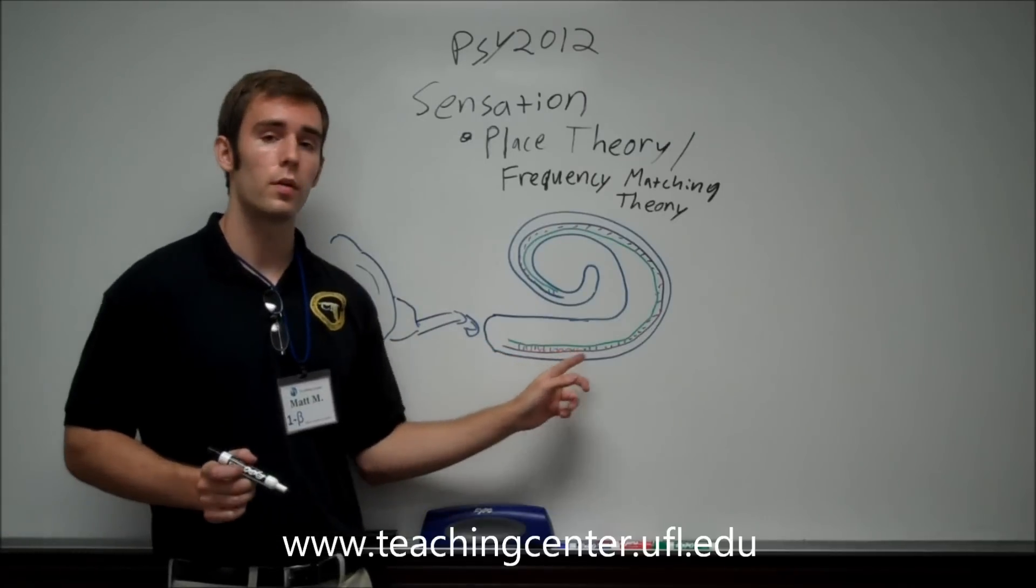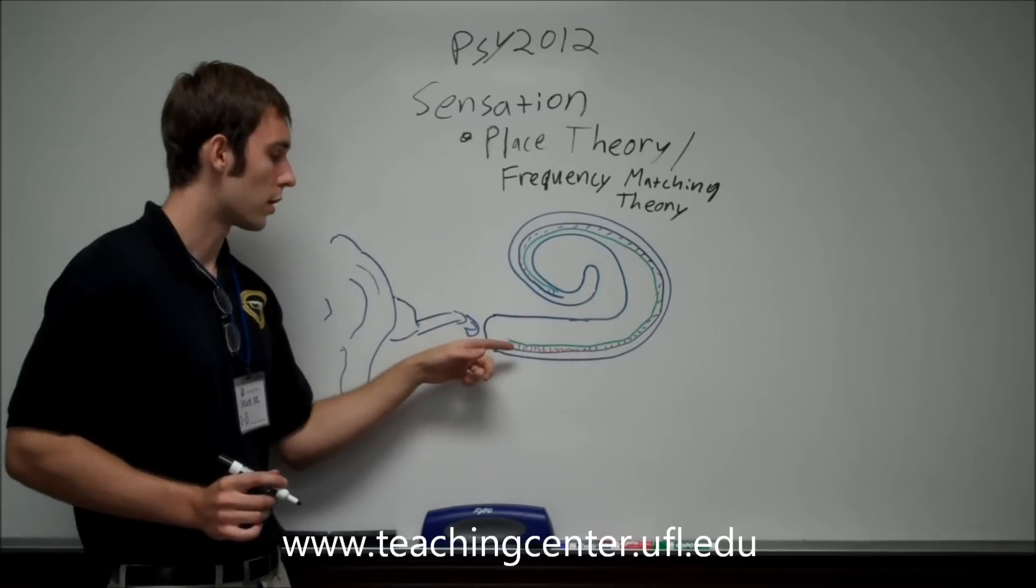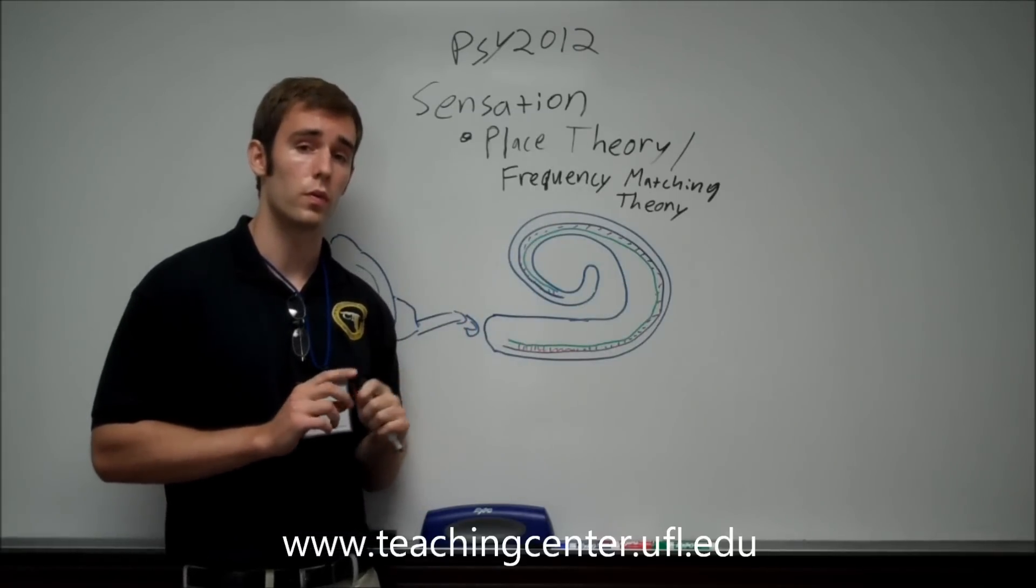Right here this blue line represents the basilar membrane, the red represents the hair cells, and the green represents the organ of Corti.